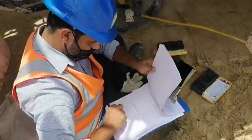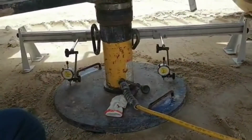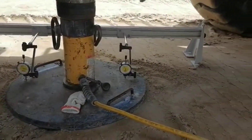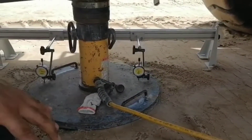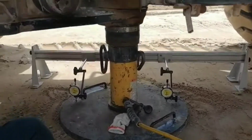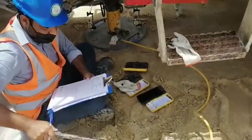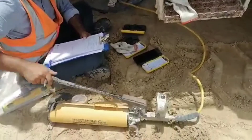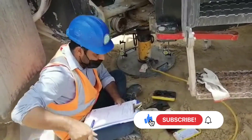We are making a small hole in the center of the excavation pit area, and this hole depth is equal to the thickness of the plate. Then we are putting the plate in the center and putting the jack on top of it. This jack is exactly under a heavy load — here we are using an excavator machine as the dead load.